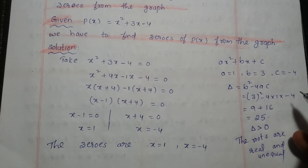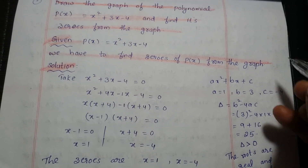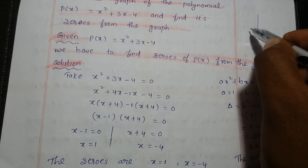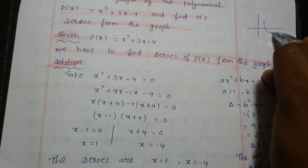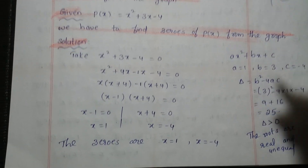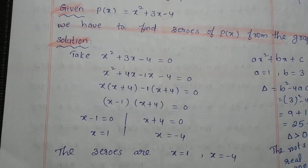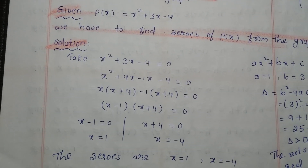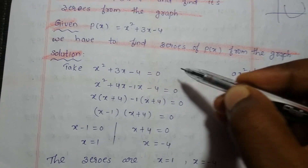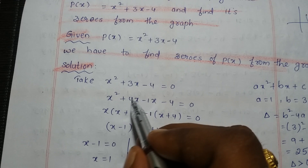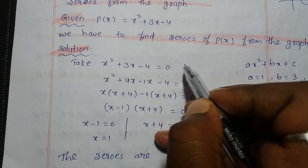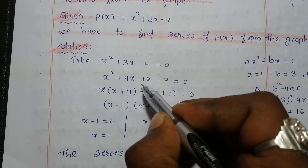Since the discriminant is greater than 0, the graph touches the x axis at two different places. Now, find the zeros by using the factorization method: x square plus 3x minus 4 equal to 0.